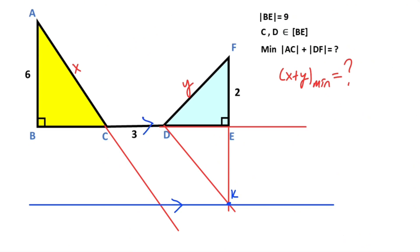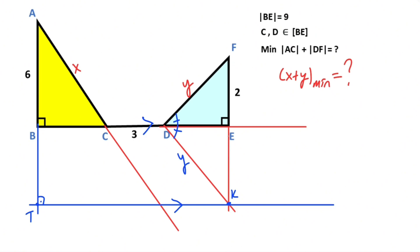After that, extend corner B like this. Here must be 90 degrees because of the parallel lines. Let's call here point T. After that, these two angles must be equal because of symmetry. Therefore if here is y units, that means this length must also equal y units. And if it is two, that means this length is also two.